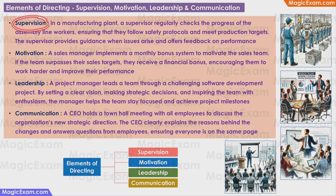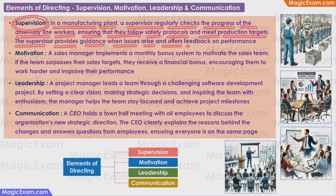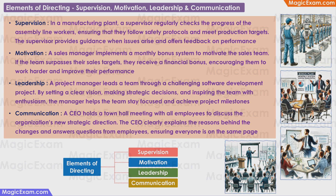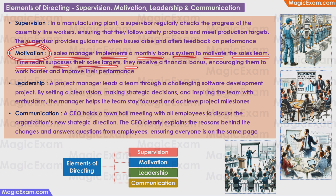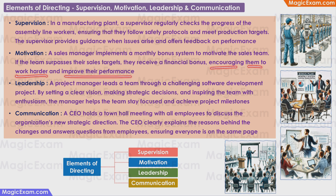What is supervision? In a manufacturing plant, a supervisor regularly checks on the progress of assembly line workers, ensuring they follow safety protocols and meet production targets. The supervisor also provides guidance whenever issues arise and offers feedback on worker performance. This is an example of supervision. What is motivation? A sales manager implements a monthly bonus system — if the team surpasses their sales target, they receive a financial bonus. This reward encourages them to work hard and improve their performance, and is an example of motivation.